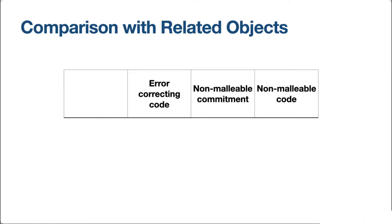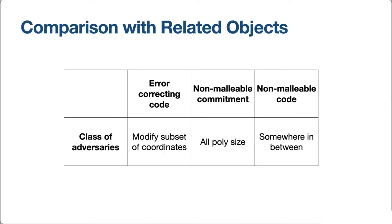Before telling you what we know about non-malleable codes, I want to draw connections with existing primitives and explain the differences. Two primitives I'll compare non-malleable codes to are error-correcting codes and non-malleable commitments. The first distinction between these three comes in the class of adversaries we're willing to tolerate. In an error-correcting code, the adversary sees the codeword but is limited in how it can modify it — usually allowed to choose some fraction of symbols and modify them arbitrarily.